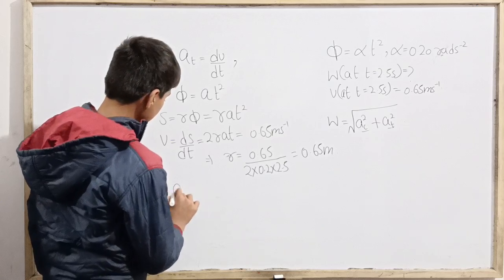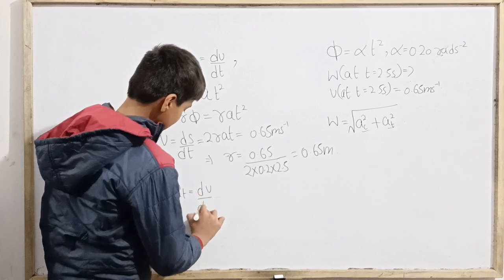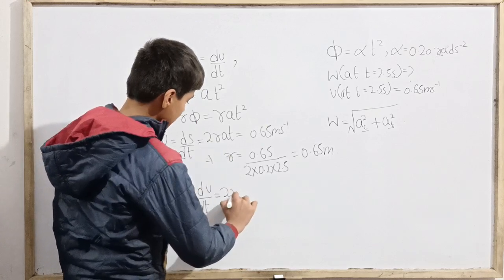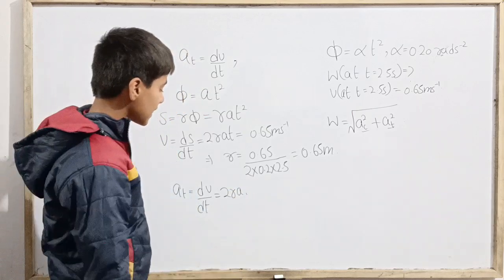And now what we will really do is that a tangential is dv over dt. Now we will differentiate, so 2ra. This is our tangential acceleration.